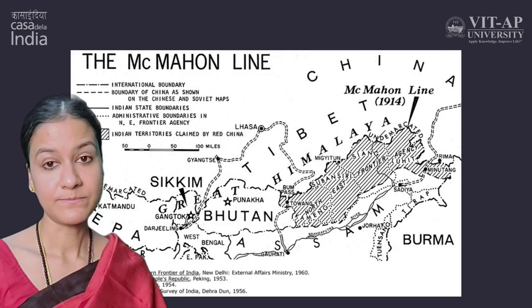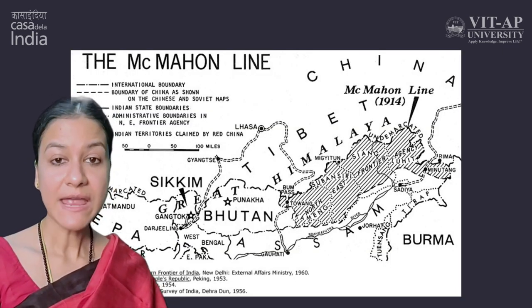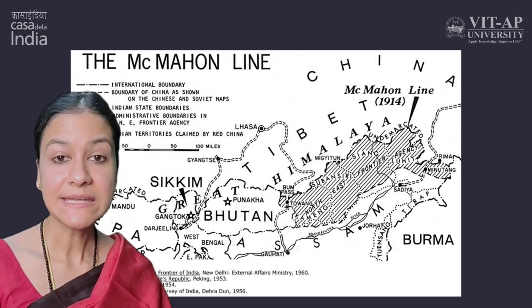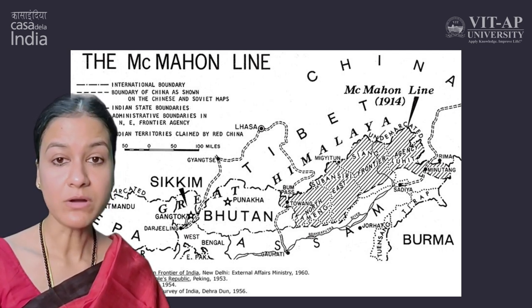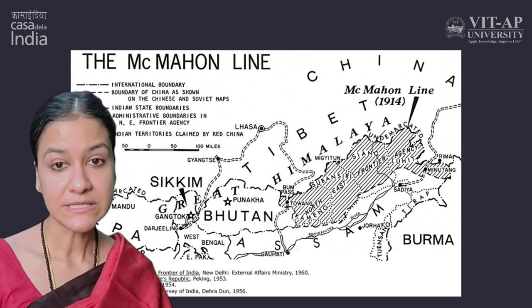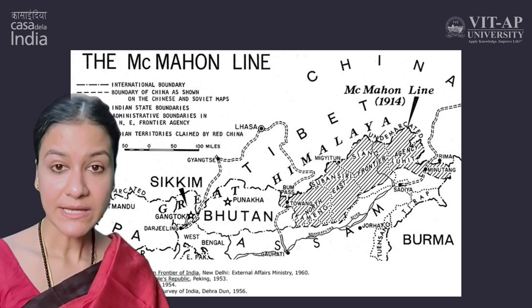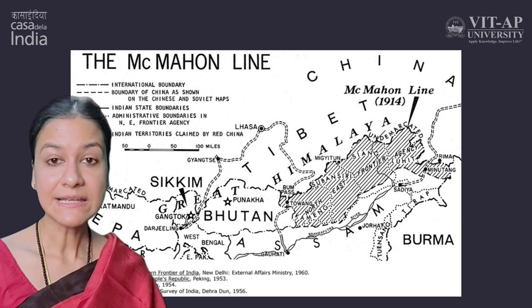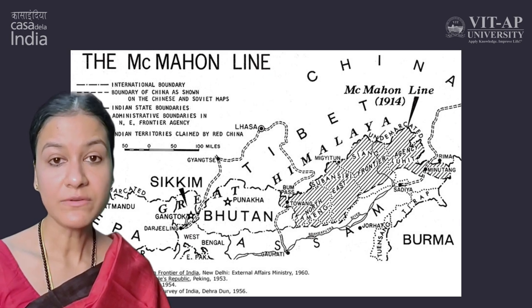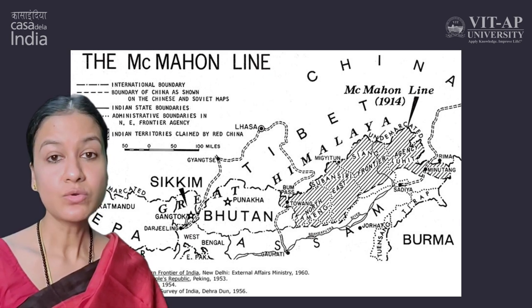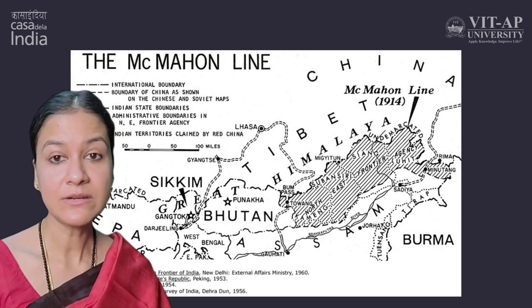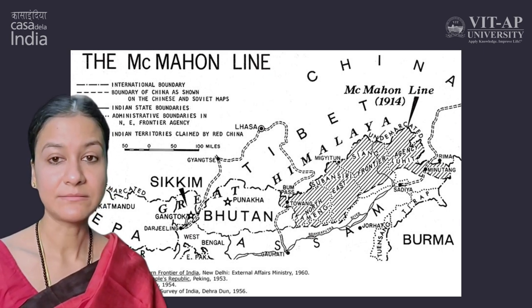For India, the McMahon line remained the border between India and China. Both countries failed to resolve the disputes through dialogue in 1960 and fought a war to claim sovereignty over this area. China still claims sovereignty over the whole of Arunachal Pradesh and objects to the visits of high-level Indian authorities into this area.